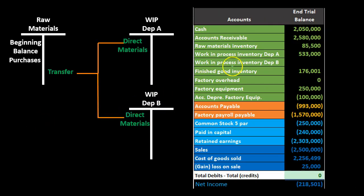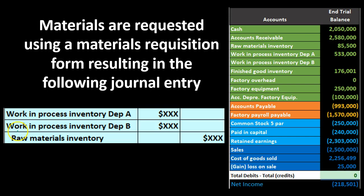In the trial balance, materials decrease and the work in process accounts for both departments increase. We credit the materials account — a debit balance asset account that goes down — and debit the work in process accounts, which go up. Since we're dealing entirely with assets, there is no net effect on total assets overall.